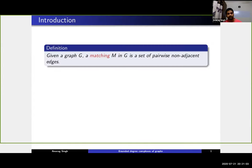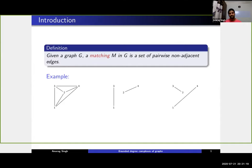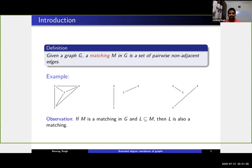Let me first start with a very classical notion from graph theory, which is a matching. A matching is nothing but a collection of edges from the graph with the property that any two edges do not intersect — they don't have a common vertex. For example, in a complete graph, edges one-three and two-four form a matching, and so do one-four and two-three. Given a graph, you can have many matchings, and any sub-collection of a matching is again a matching.